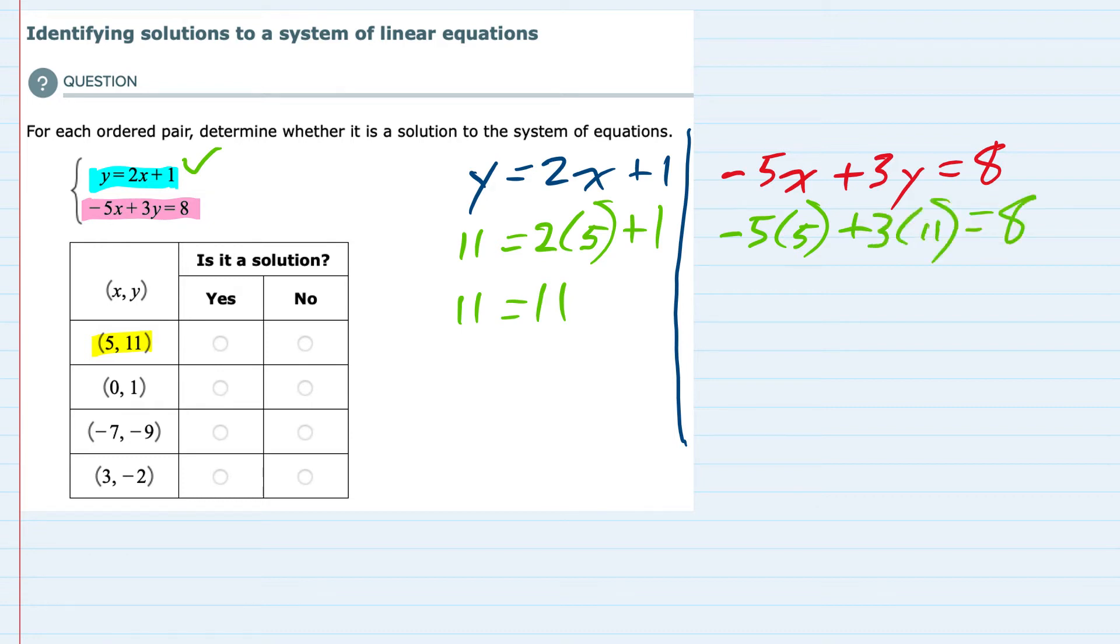This time simplifying the left hand side, negative 5 times 5 is negative 25 plus 3 times 11 is 33. Does that equal 8? Yes. Negative 25 plus 33, the signs are different, so we subtract and keep the larger sign. We get 8 equals 8. So the point (5, 11) worked in both equations, that is a yes.